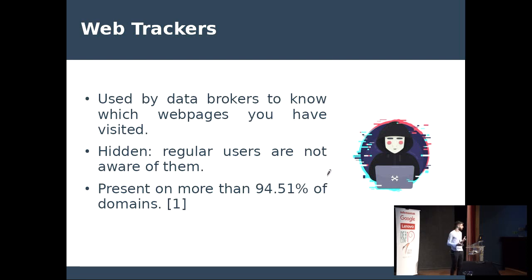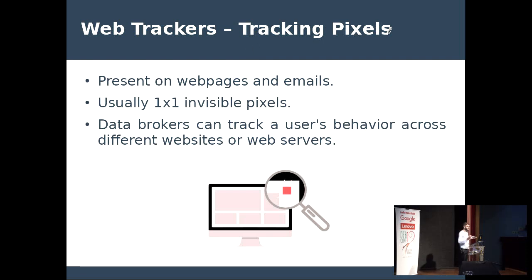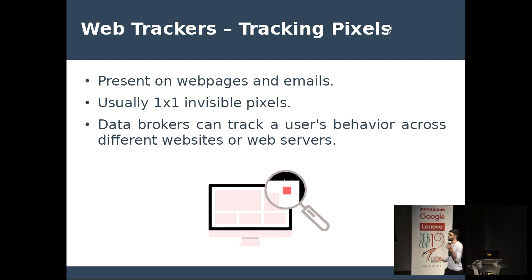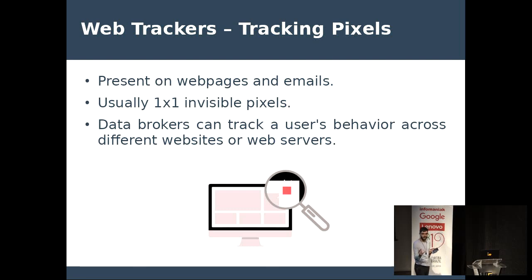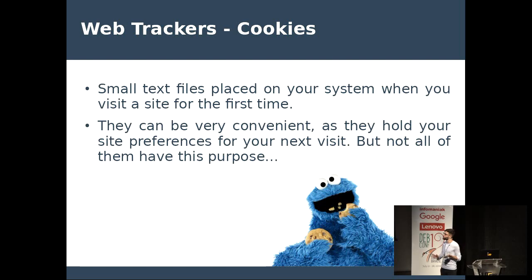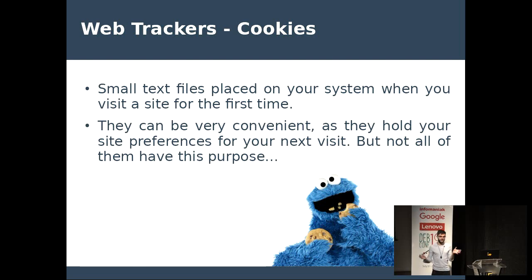I don't want to get too technical, but I'll explain some of the techniques they use. One of the most common ones is tracking pixels. Tracking pixels are present on web pages and emails — they're usually invisible one-by-one pixel images that data brokers send to you as an image request. In the moment that you accept this request, you send back your IP address, so they know that you're there. A similar approach is done with cookies. Briefly, cookies are small text files placed on your system when you visit a website, and they store your preferences. For example, if you go to a web store, put an item in your cart, close the page, and reopen it another day, your item is still there — that's because of cookies. So cookies are nice.